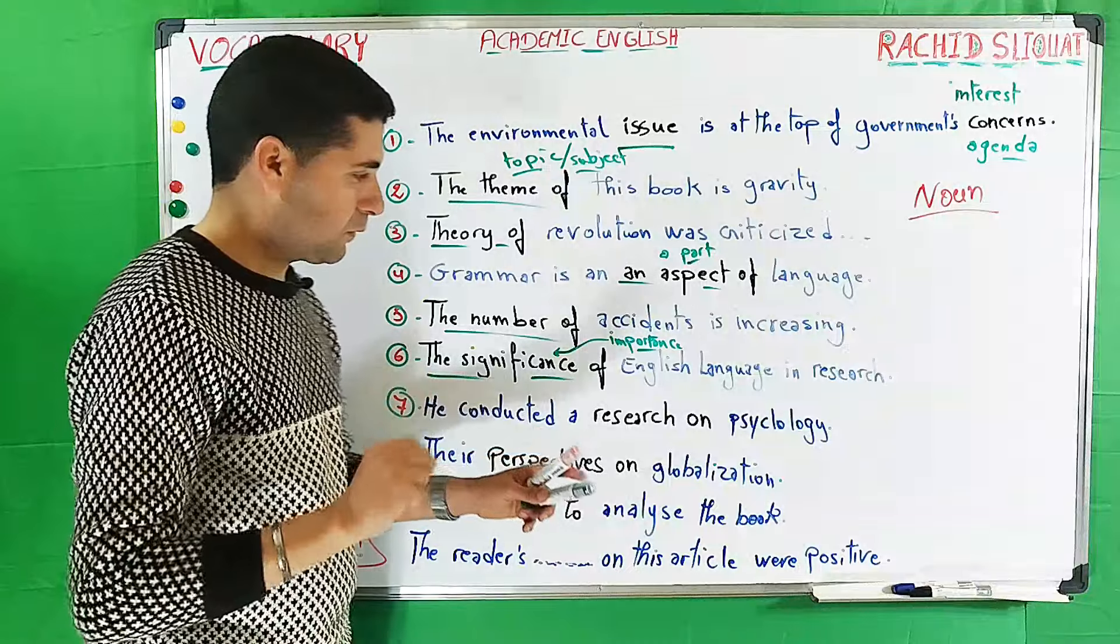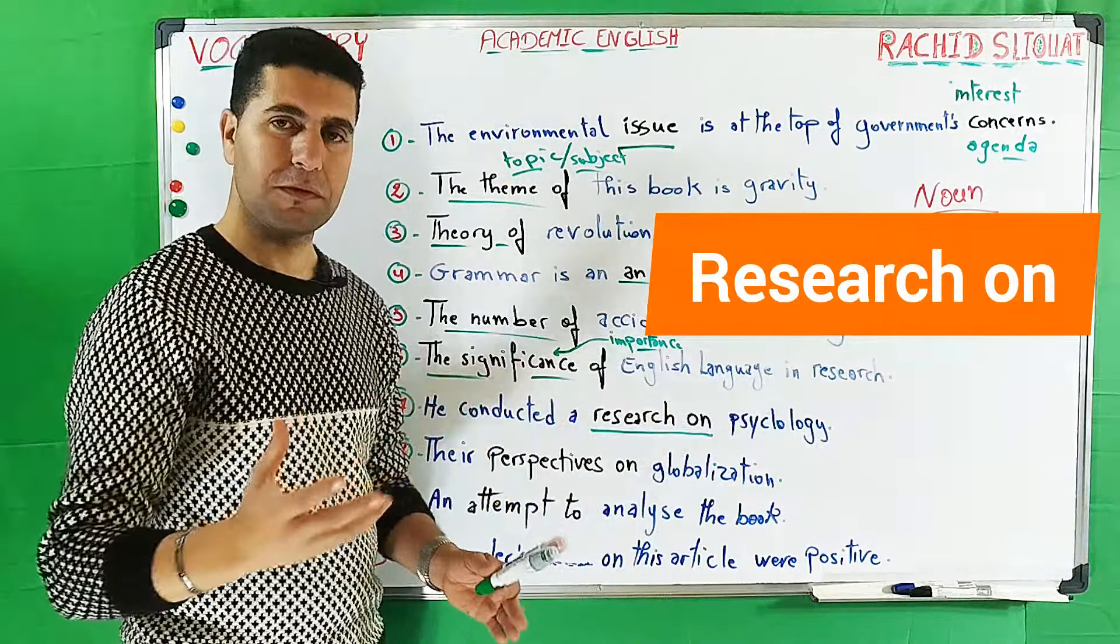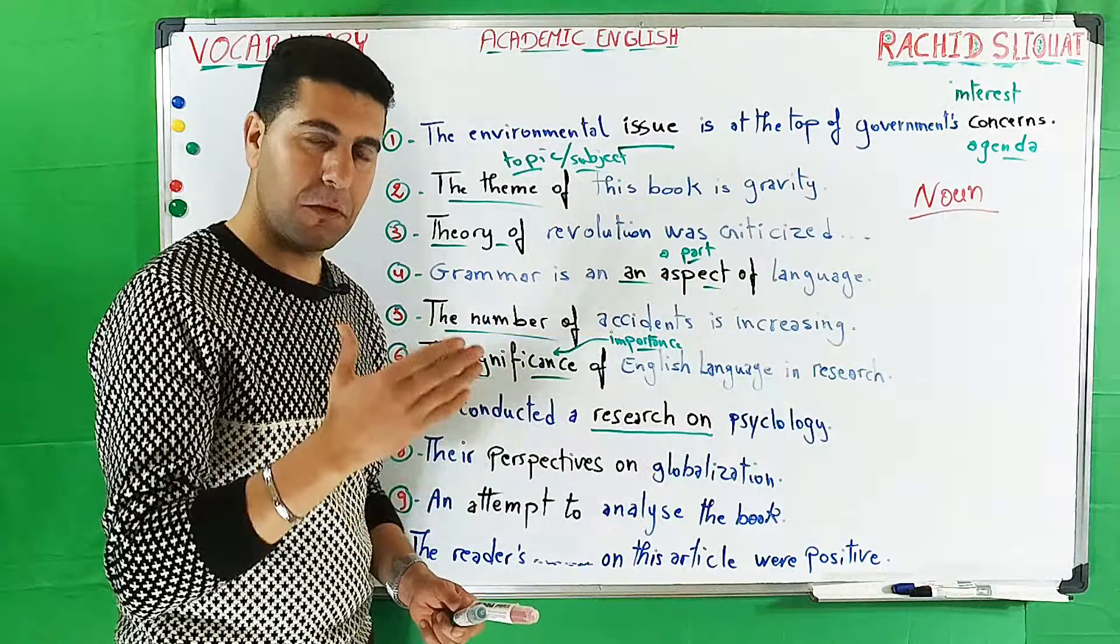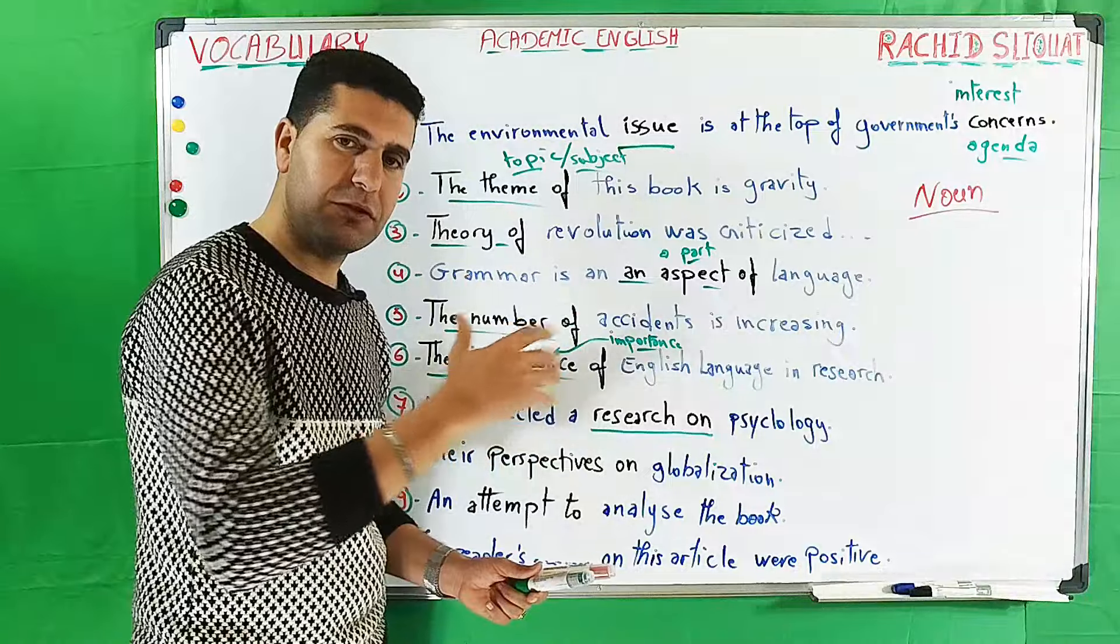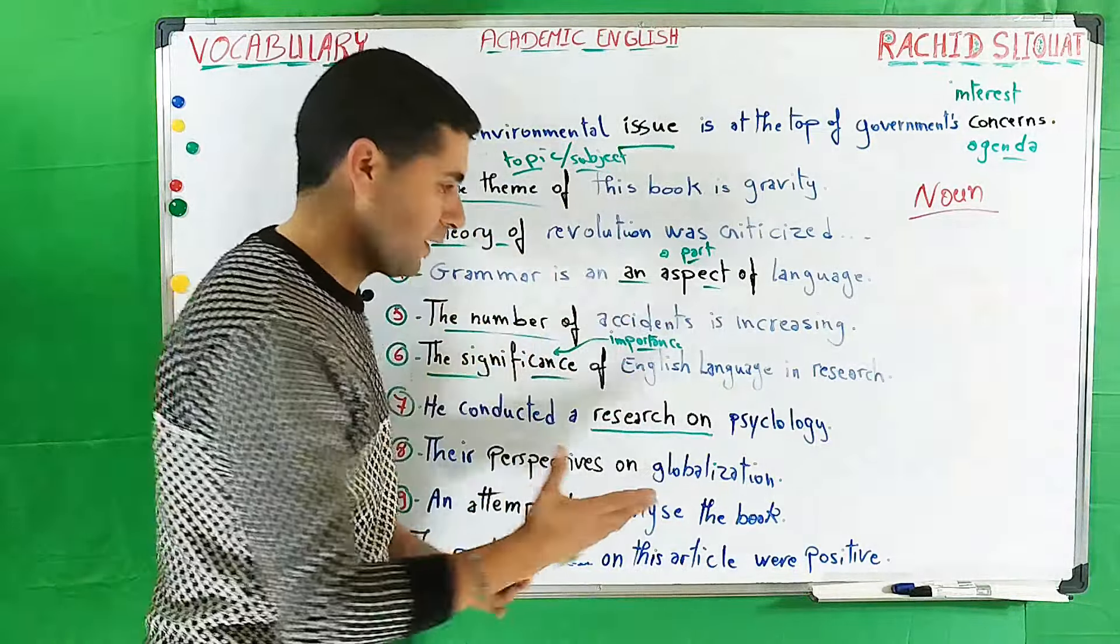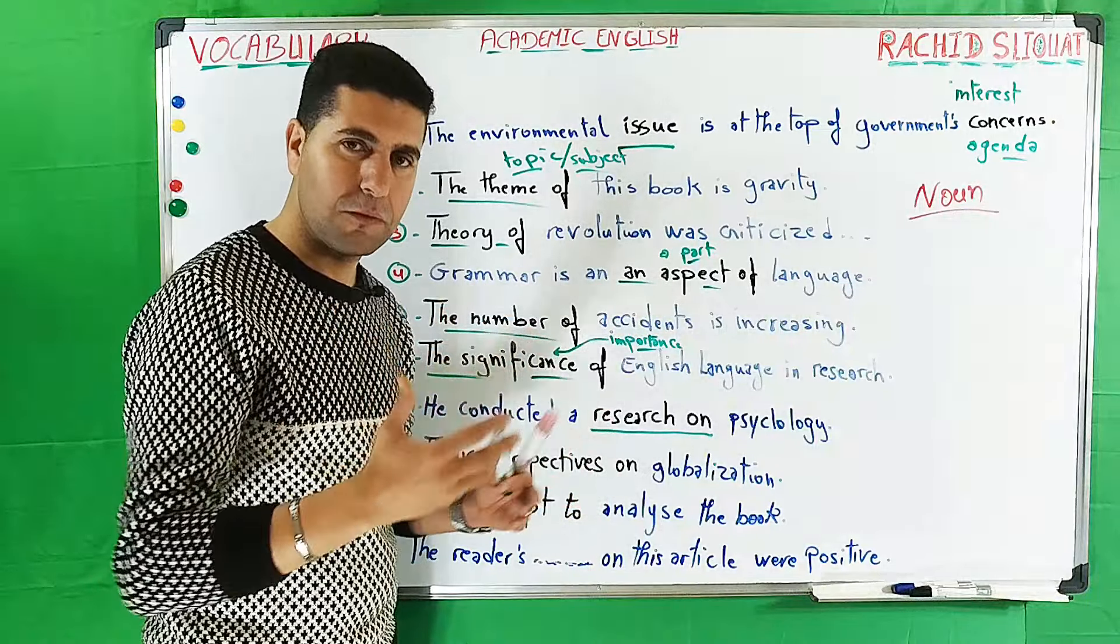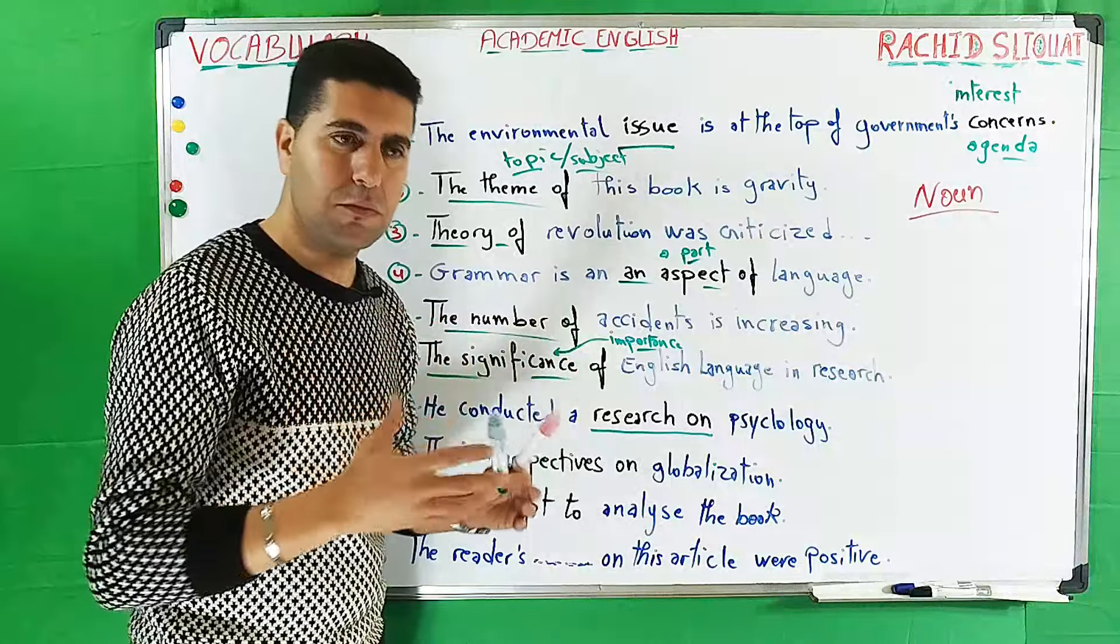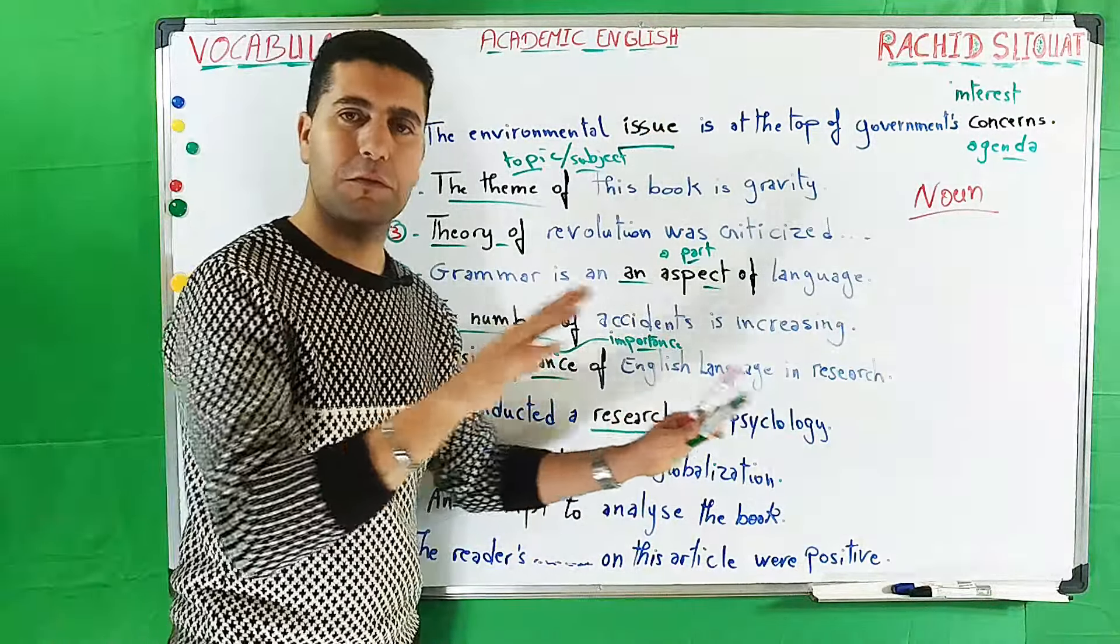Number seven: 'He conducted a research on psychology.' Research is something we conduct based on methodology, design, etc. A research is always an attempt to reveal, to reach certain results. That's what we mean by research—methodology, design, a kind of experiment, a kind of endeavor or try to reach certain results about a certain topic.